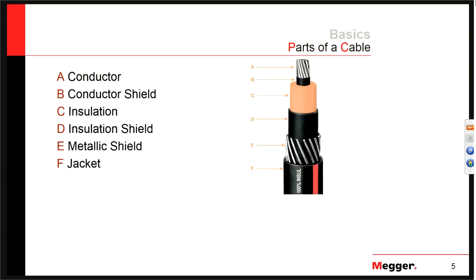The semi-conductive layer helps smooth those out and provides a nice smooth transition into the bulk insulation. The bulk insulation is there to hold the voltage back — it's typically EPR, XLPE, or many other kinds. After the bulk insulation is the same semi-conductive material to provide a smooth transition onto the metallic screen layer. Finally, there is the outer jacket, which is primarily there for mechanical and moisture protection.